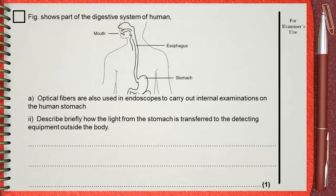Describe briefly how the light from the stomach is transferred to the detecting equipment outside the body.